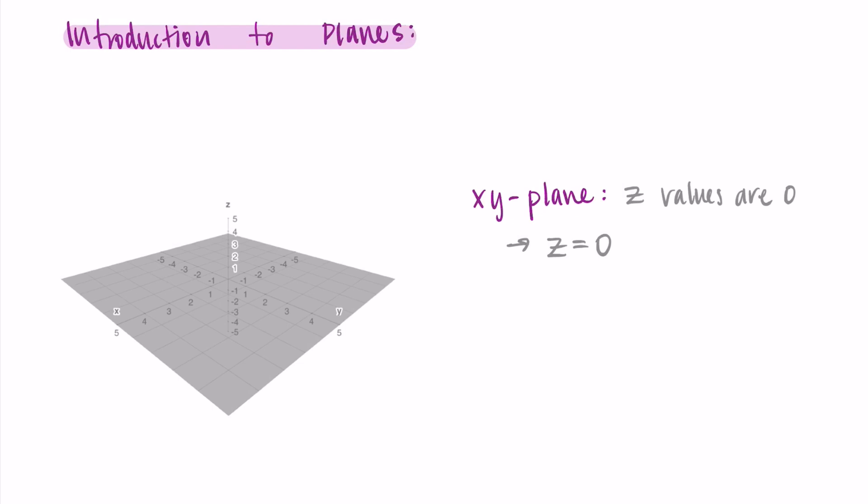z equals zero actually represents the formula for this plane. So if we're in three dimensions and I give you z equals zero you could graph that or imagine that as a plane, the xy plane.